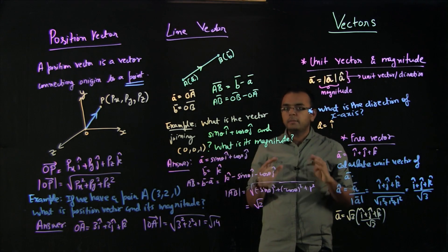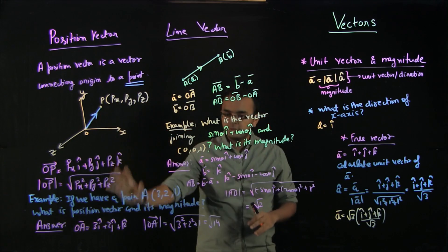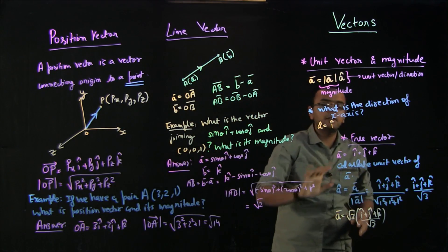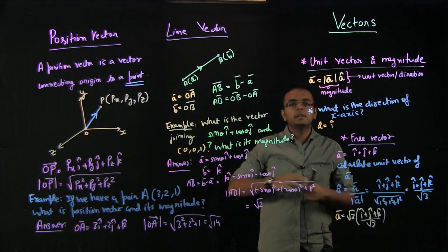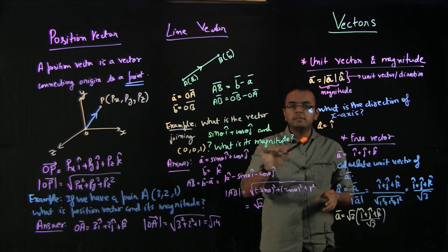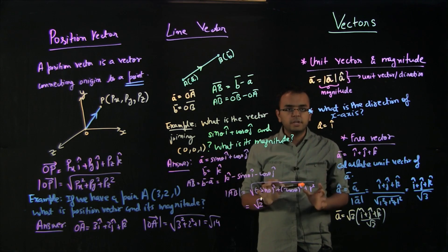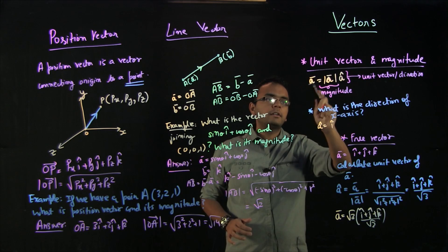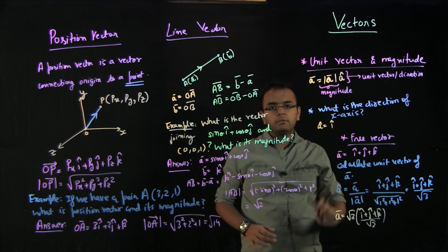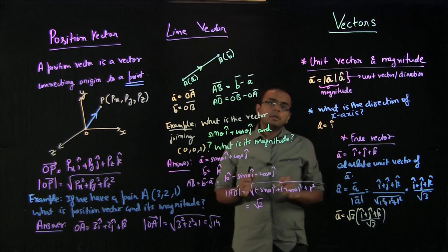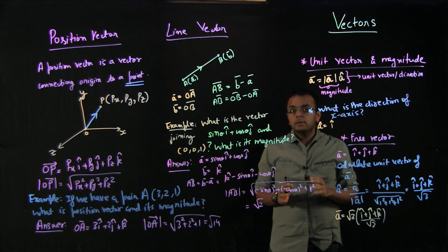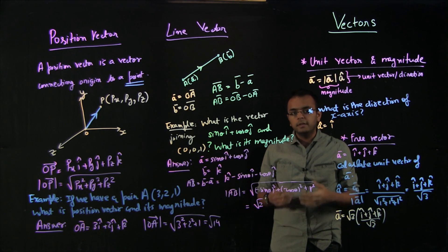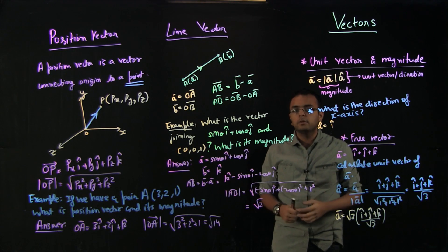So, till now in this video we covered very basic stuff. Position vectors refer to a point. Line vectors refer to joining two points. Free vector refers to a vector that is neither fixed to a point nor a line — it can move freely around the space with a fixed magnitude and fixed direction. Unit vector means just the direction, obtained by dividing the vector by its magnitude. In the next video, we will talk about addition of vectors and the section formula. Thank you.